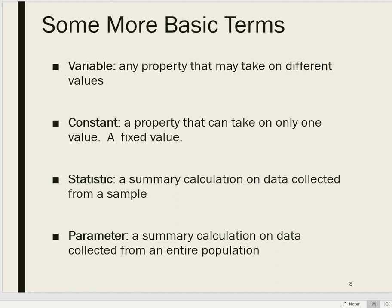A constant, on the other hand, is a property that takes on a fixed value, at least in the context of a study. In our salt lamp example, we might hold constant the university where the study takes place, the room in which the salt lamp or control condition occurs, and the temperature of that room — keeping as many things as possible constant in an attempt to isolate the effects of the salt lamp variable on our mood measure.